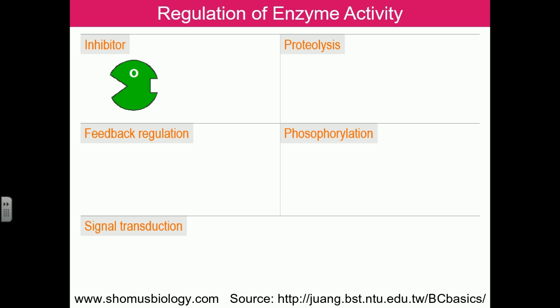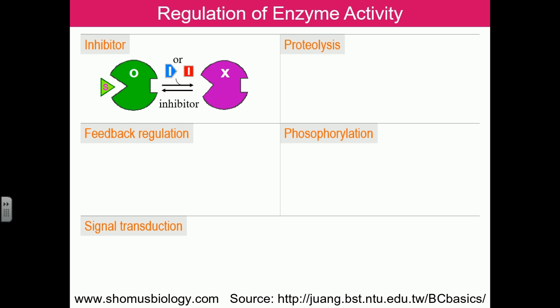Looking at inhibitors first: there are three types of enzyme inhibition — competitive inhibition, non-competitive inhibition, and uncompetitive inhibition. In competitive inhibition, the substrate and inhibitor compete for the active site of the enzyme. For allosteric enzymes, which have different sites for interaction, the inhibitor can bind to a separate inhibitor binding site and prevent the enzyme from converting substrate into product.